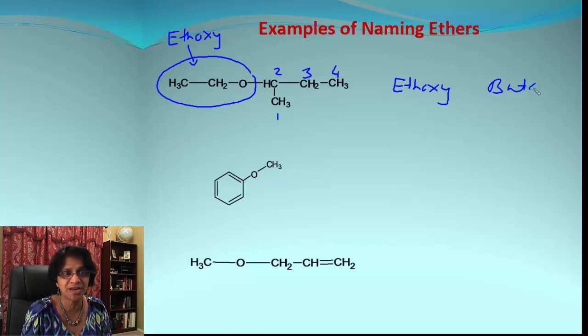Now there is one more thing - we need to write down the attachment of alkoxy group is at the two position. So you can say ethoxy-2-butane or it could be 2-ethoxybutane.